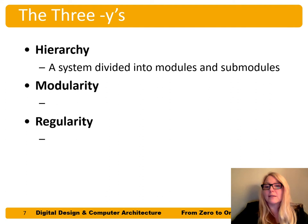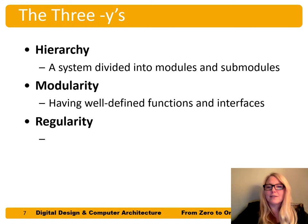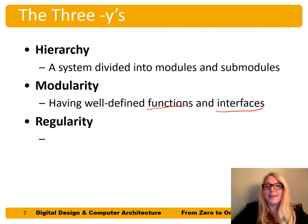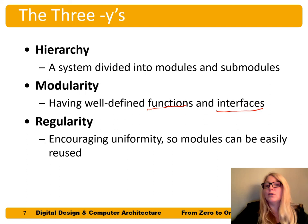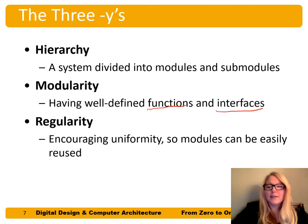A module has a well-defined function — what it does — and a well-defined interface — how we interact with it. For your car, for example, the interface is the steering wheel; that's how you interface with it to turn it in certain directions. The last principle is regularity — encouraging uniformity so modules can be easily reused. When I go to buy a tire for my car, they don't have to make it from scratch; it has a regular interface that most tires share.